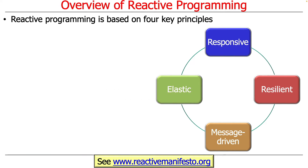These are some of the different types of interaction models and use cases that reactive programming supports. There are four key principles in reactive programming: responsiveness, resilience, elasticity, and message-driven. We're going to talk about each of these four principles very briefly.